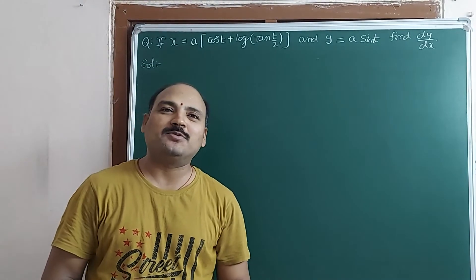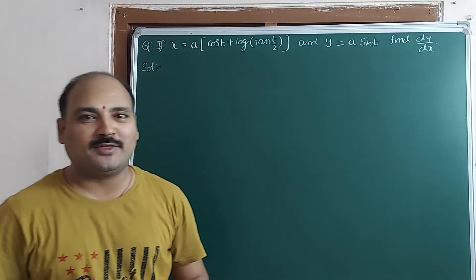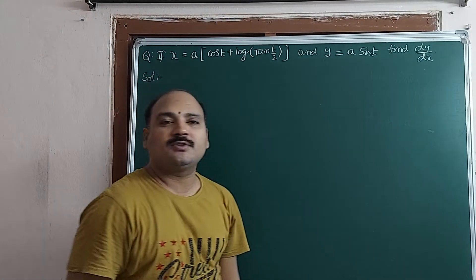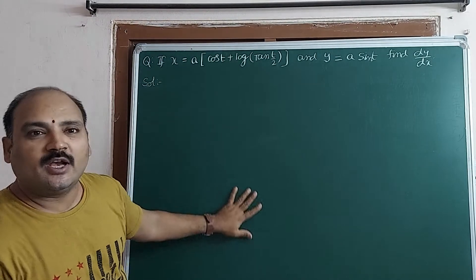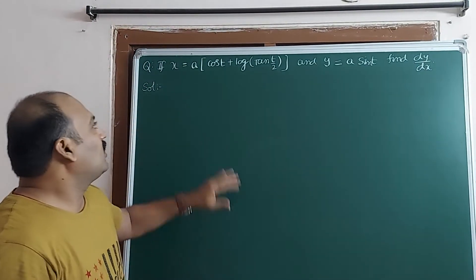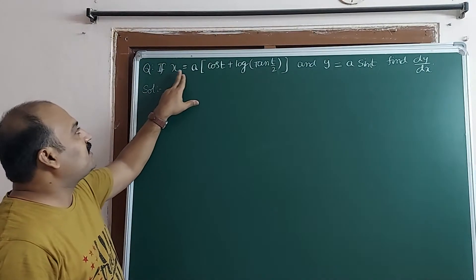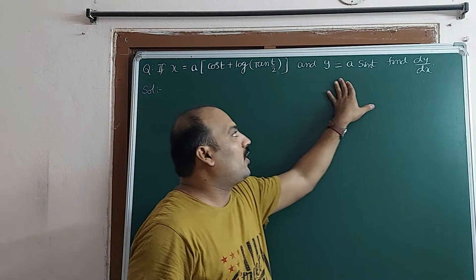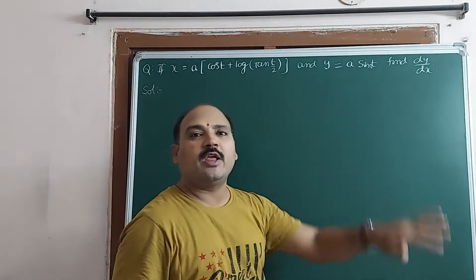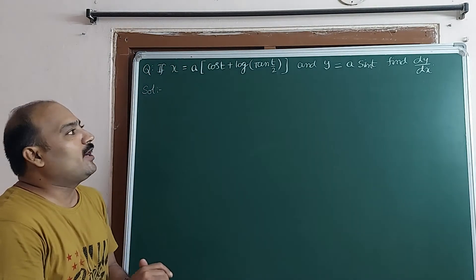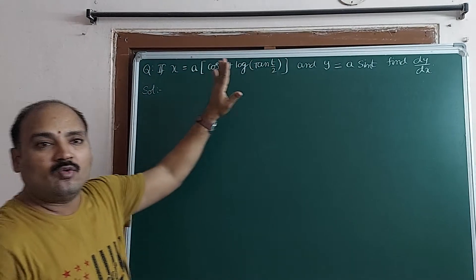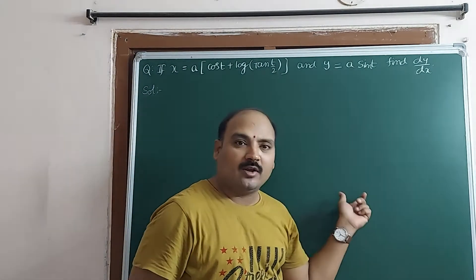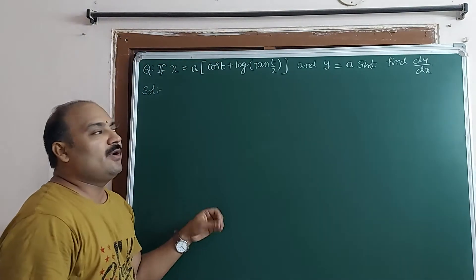Hi, hello dear students, welcome to our channel Maths with Panidra. In this video we are going to discuss differentiation for marks questions. This problem is related to parametric differentiation. The question is: if x = a(cos t + log(tan t/2)) and y = a·sin t, find dy/dx. Since x and y are in terms of t, we calculate dx/dt, dy/dt, and then find dy/dx.